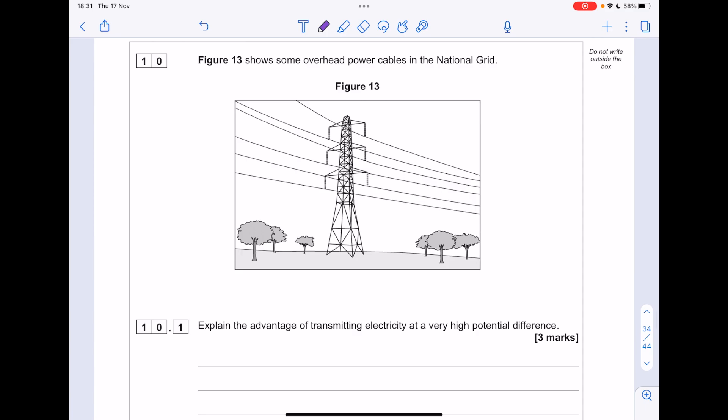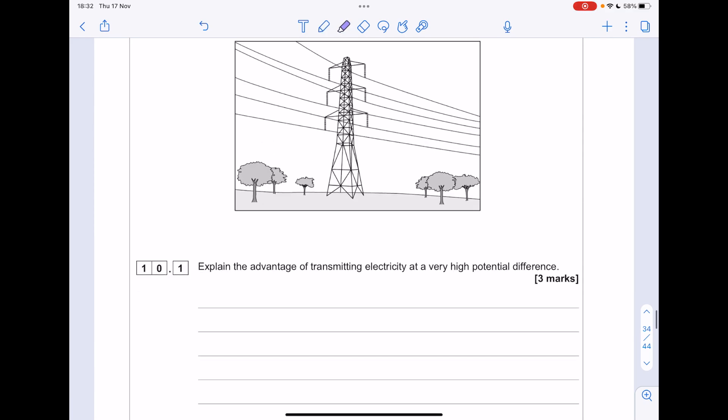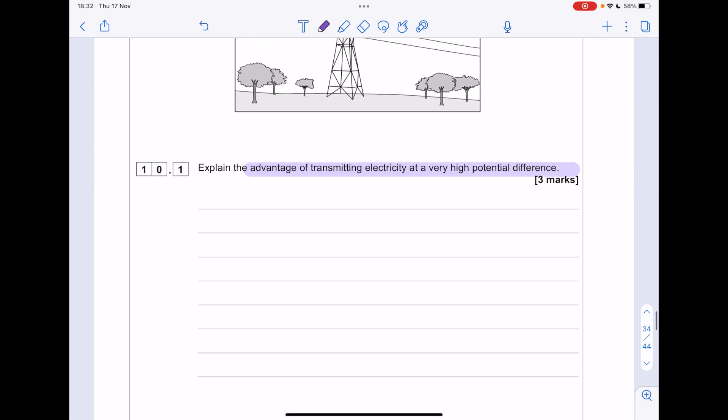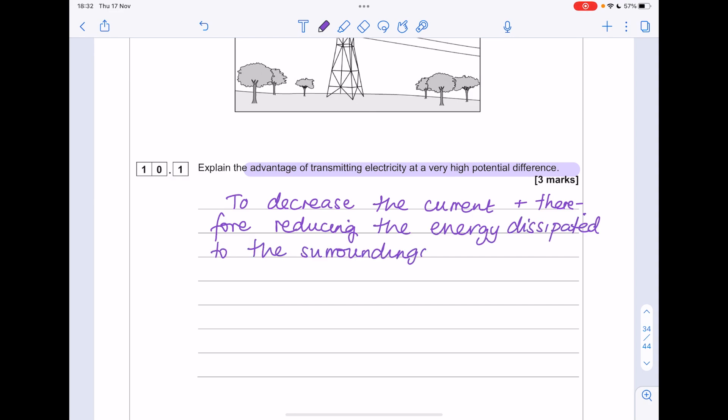Figure 13 shows some overhead power cables on the national grid. Explain the advantage of transmitting electricity, a very high potential difference. Okay, why do we get the voltage or potential difference high? To decrease the current. Because remember, high currents have a heating effect, meaning that energy is dissipated. So fundamentally, there's an increased efficiency of power transmission.